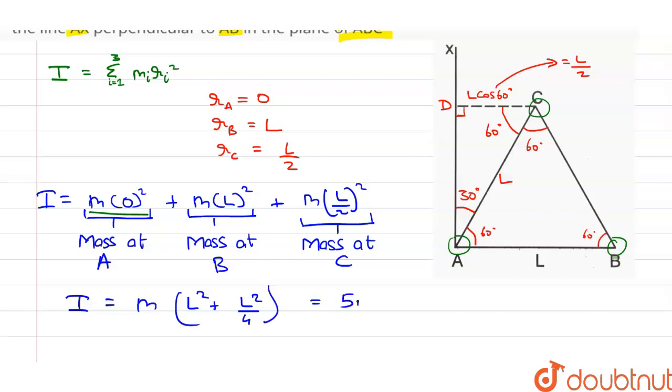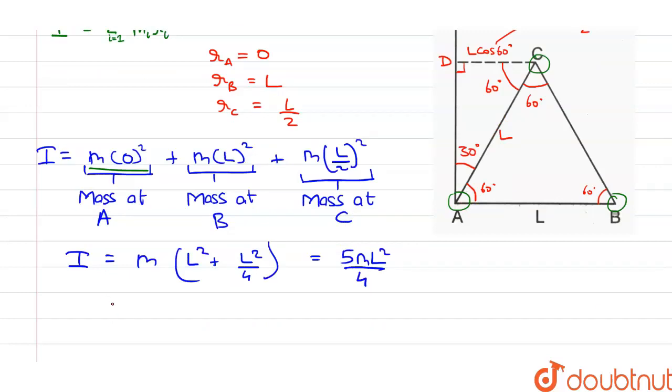We get 5mL square by 4. Therefore, moment of inertia about line AX is equal to 5mL square upon 4.